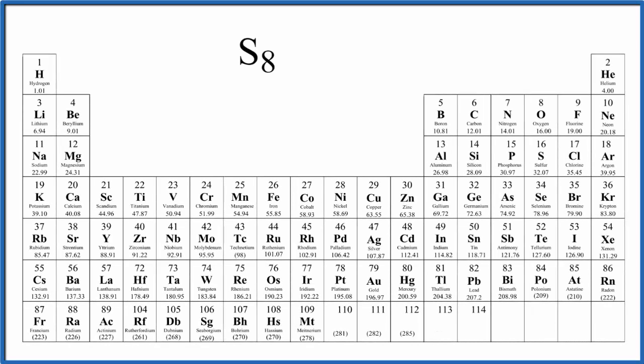Let's find the molar mass for S8. This is called octa-sulfur — octa because there are eight sulfur atoms bonded together. This is what we call an allotrope of sulfur.